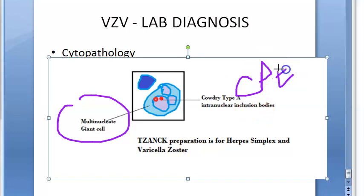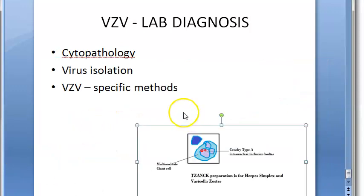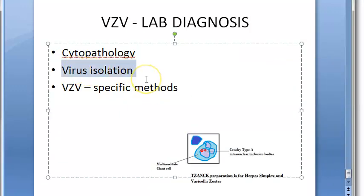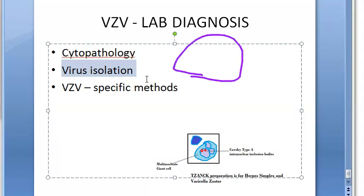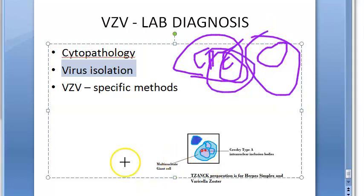That is the Tzanck smear — you put Giemsa stain on the scraping from the ulcer base. It reveals cytopathological changes: the cytopathic effect of herpes viruses, including multinucleate giant cell formation. That is cytopathology. Then for virus isolation, you will try to isolate or cultivate the virus in various cell lines. After cultivating in those cell lines, you check for cytopathic effects, which help in detection of viral growth.